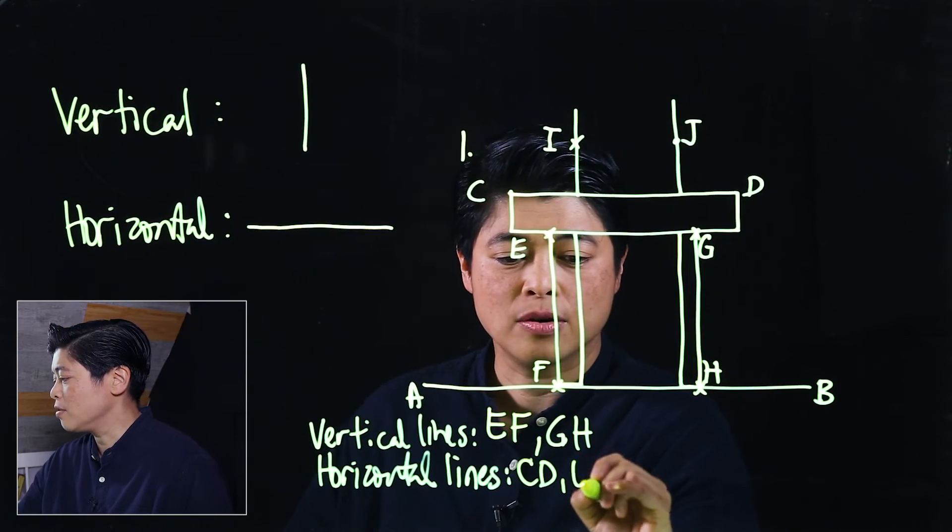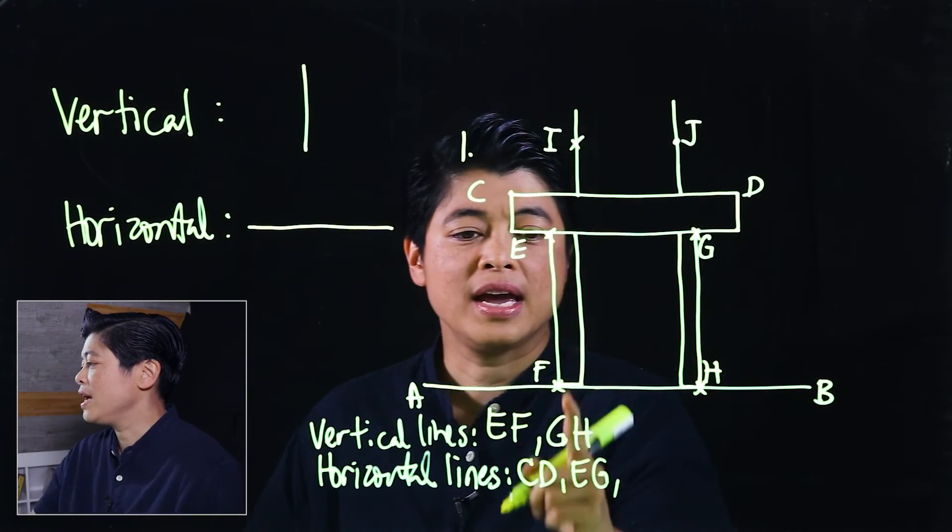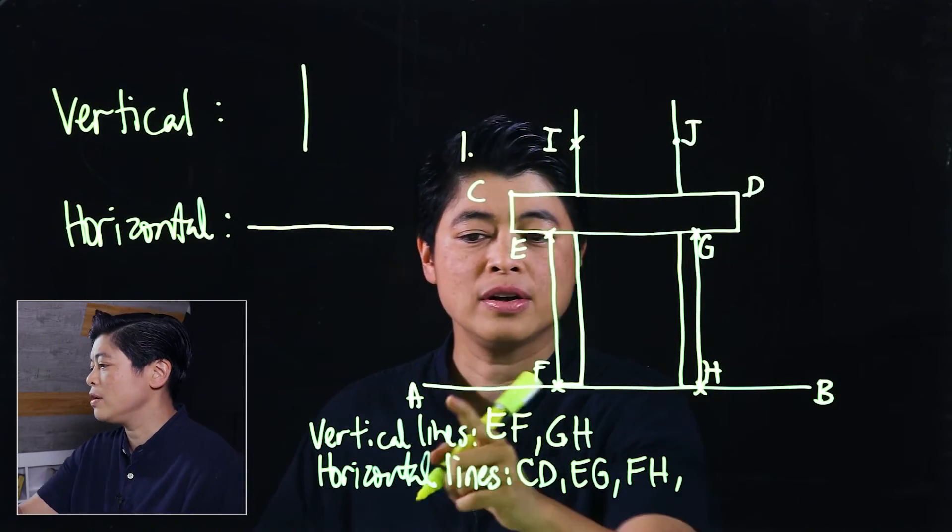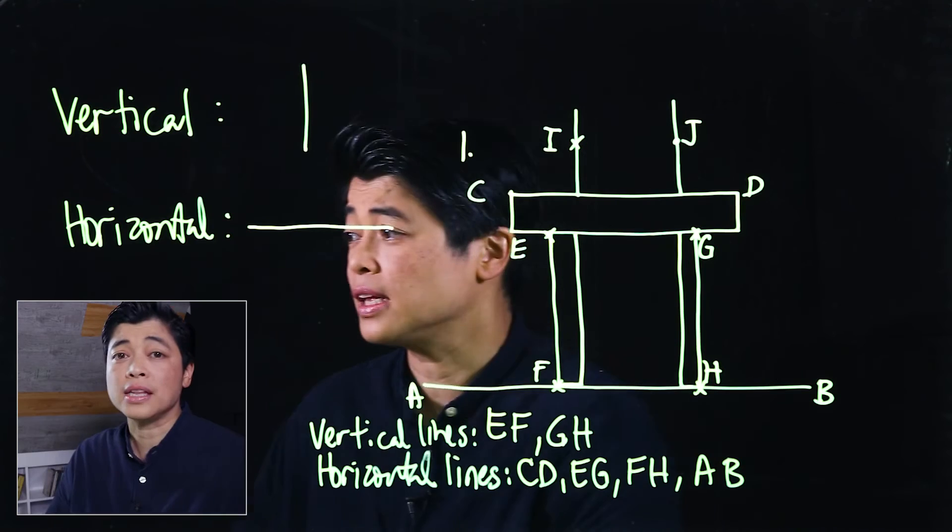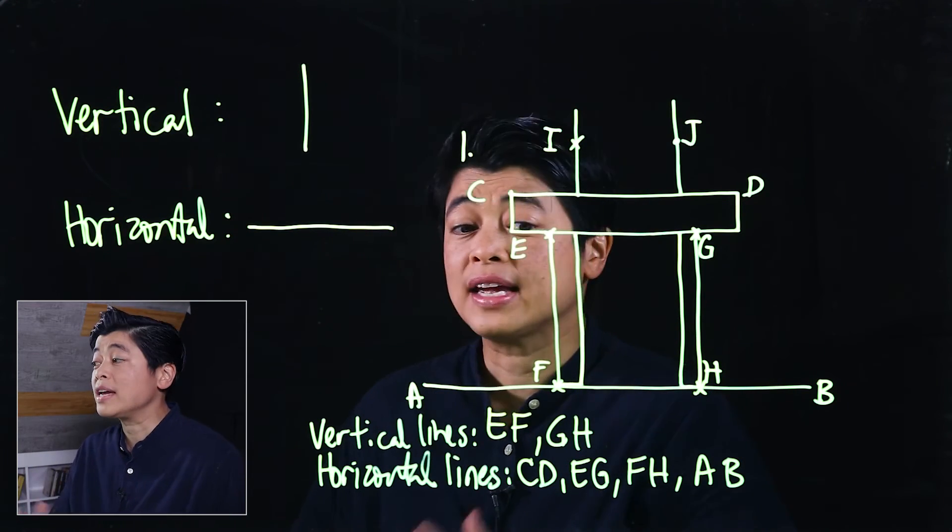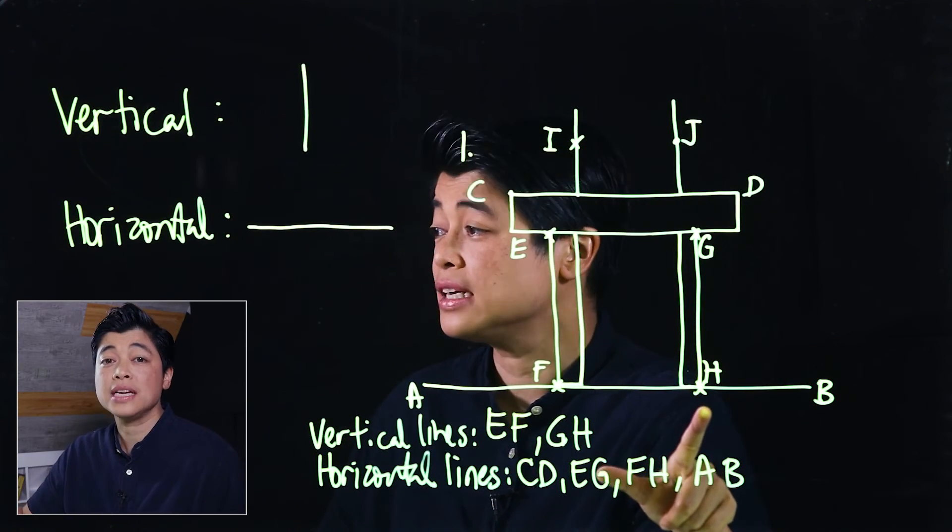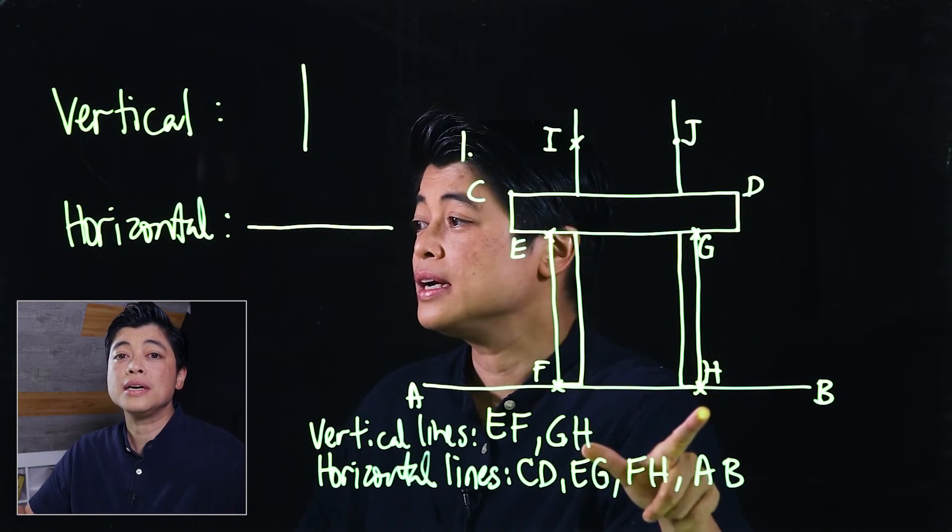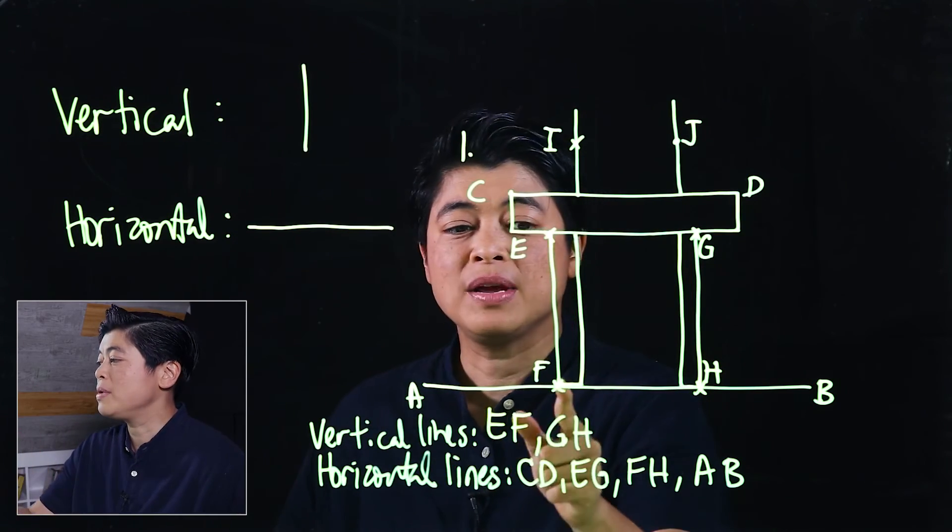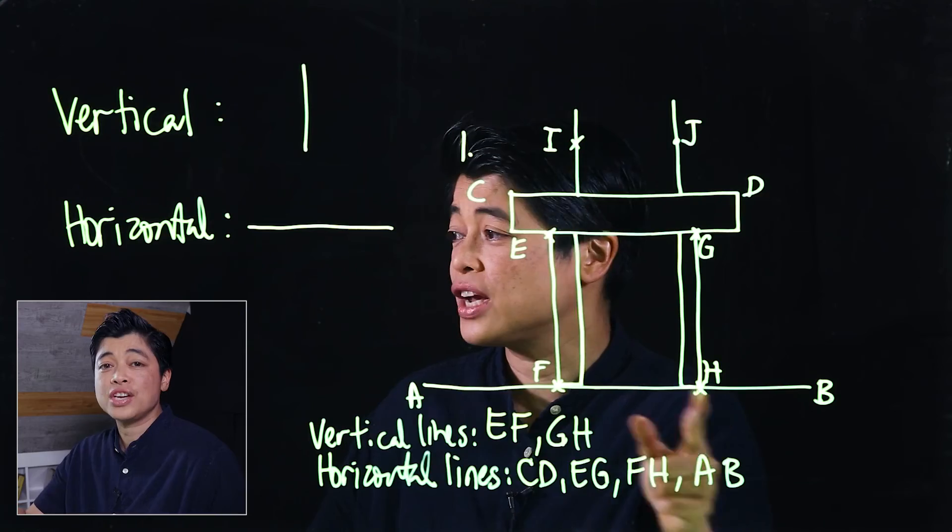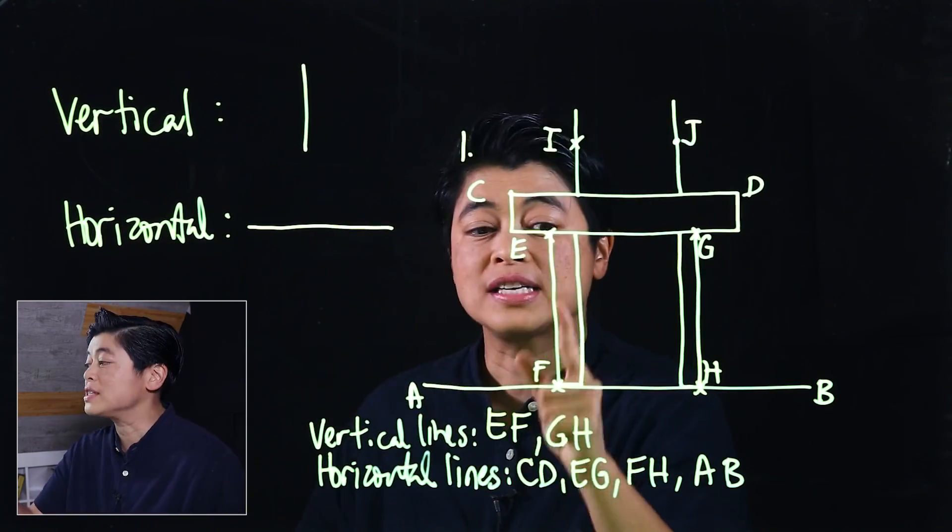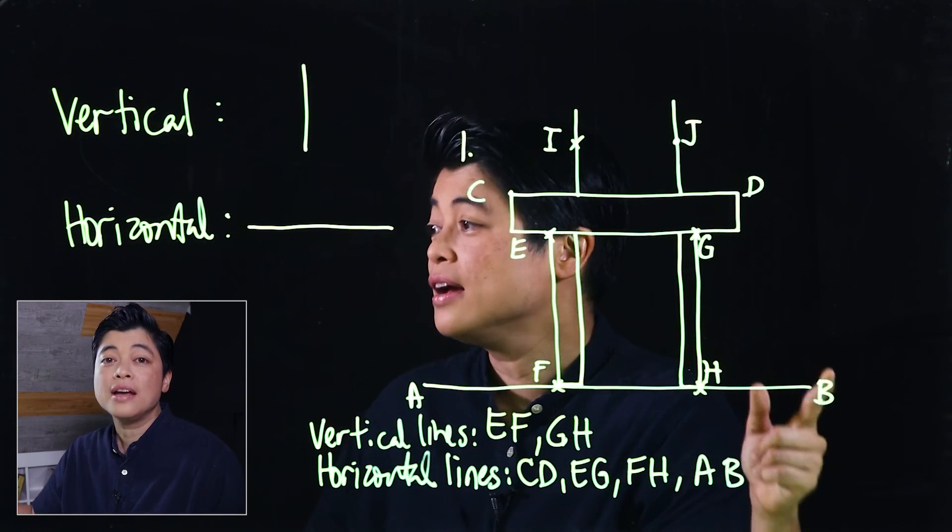But it's also not incorrect if the kids would want to name AH because that's also a line. In essence, most of the time what will register in our kids' minds would be the EG, the FH, and the AB. But technically, any combinations of the letters A, F, H, and B are all horizontal lines. That concludes Lesson 3 of Chapter 15, which also concludes the chapter. See you in the next chapter.